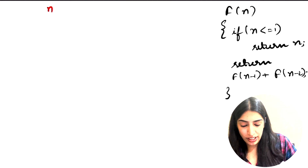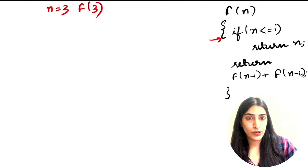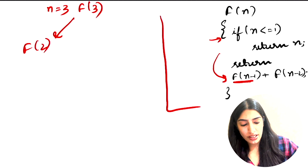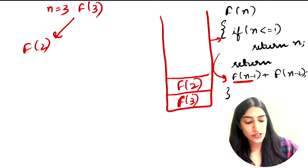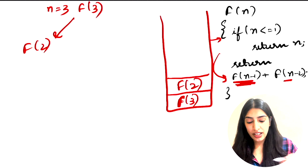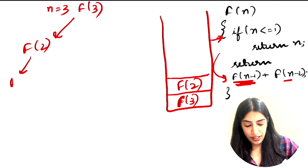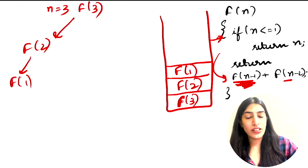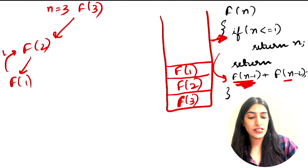The screen got a bit hot, so let's visualize again for n equals 3 and finish our recursive tree and recursive stack. We call F(3), check the base condition — it's not true — so we call F(2). In memory: space for F(3) is allocated, then space for F(2) on top. From F(2) we call F(1) — again the condition is not true — so memory is allocated for F(1).